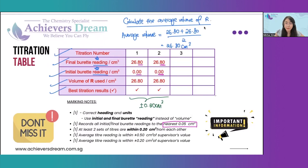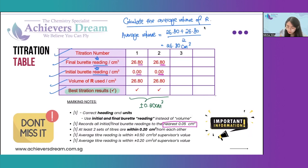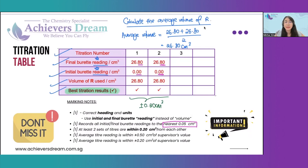To calculate the average volume, you need to show your working, and we only take the average from the best titration results. So if you have a total of four results, you only take the average of the two best titration results that you choose. In this case, it will be 26.8 plus 26.8 divided by 2. Even if they are the same value, you still have to show the working.